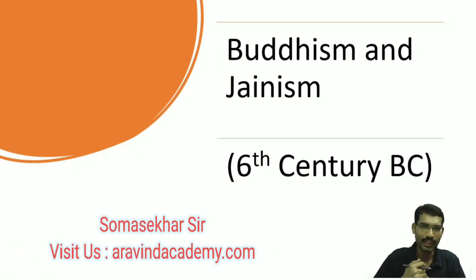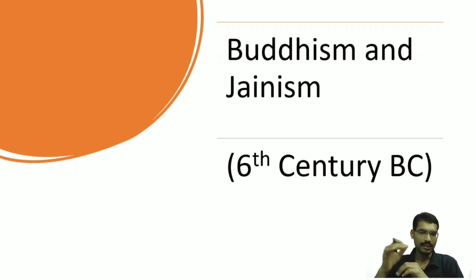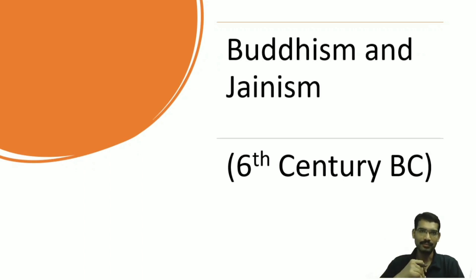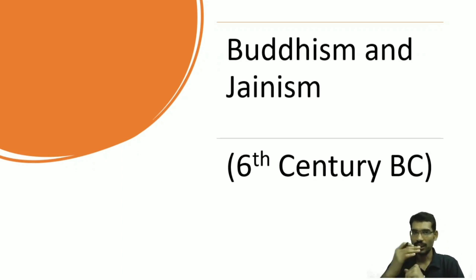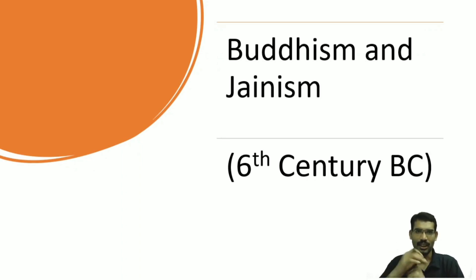Hello students, welcome to the history class of Arvind Academy. In today's class we study about Buddhism and Jainism. In sixth century BCE, many religious sects arose in the middle Gangetic plain. Buddhist texts say nearly 62 sects were there, and Jain texts say more than 300 religious sects existed. This shows there was some kind of social unrest in the post-Vedic society, which caused new ideas to emerge. First, we see what are the factors for the emergence of new religious ideas.